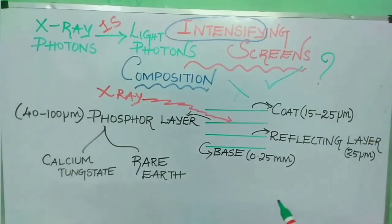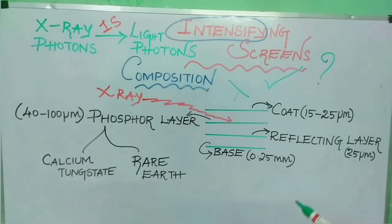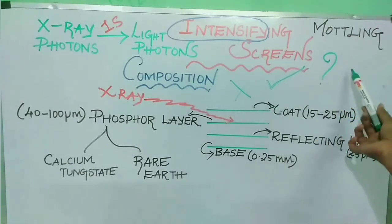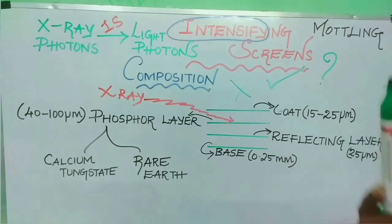The major disadvantage of using an intensifying screen is that it produces images with less resolution. This is because of the gap present between the intensifying screen and the film and also because of the diverging light photons emitted in all directions. Another disadvantage is that it produces mottling, which is an irregular pattern of density. This occurs because of non-uniformity in the coating of fluorescent phosphor crystals.